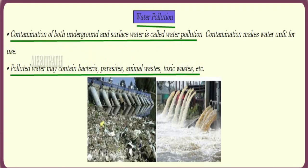Next is water pollution. Contamination of both underground and surface water leads to water pollution and makes water unfit for drinking. This polluted water contains bacteria, parasites, animal waste, toxic waste, and more.